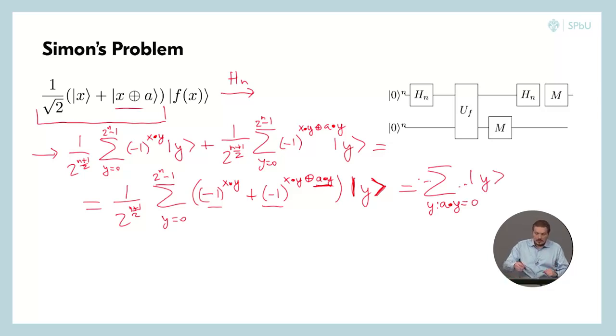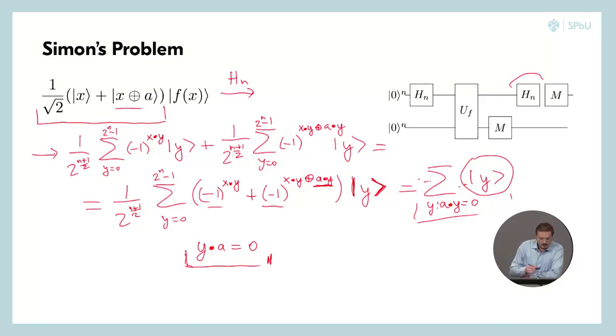And if we measure this sum after this Hadamard transform, we will get one of these y's, the y's which satisfy this condition. And this looks like an equation to solve. And we need n linearly independent of these y's to obtain, well, the complete value of this a.